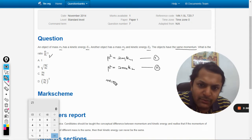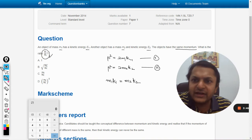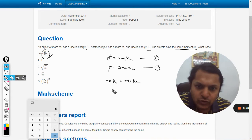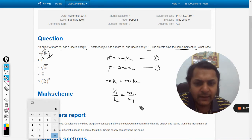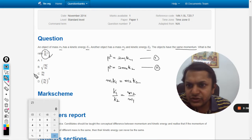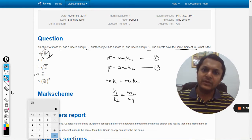So m1k1 equals m2k2, and they want you to find the ratio e1 by e2. So k1 by k2 will equal m2 by m1. Very simple. So our answer should be C.